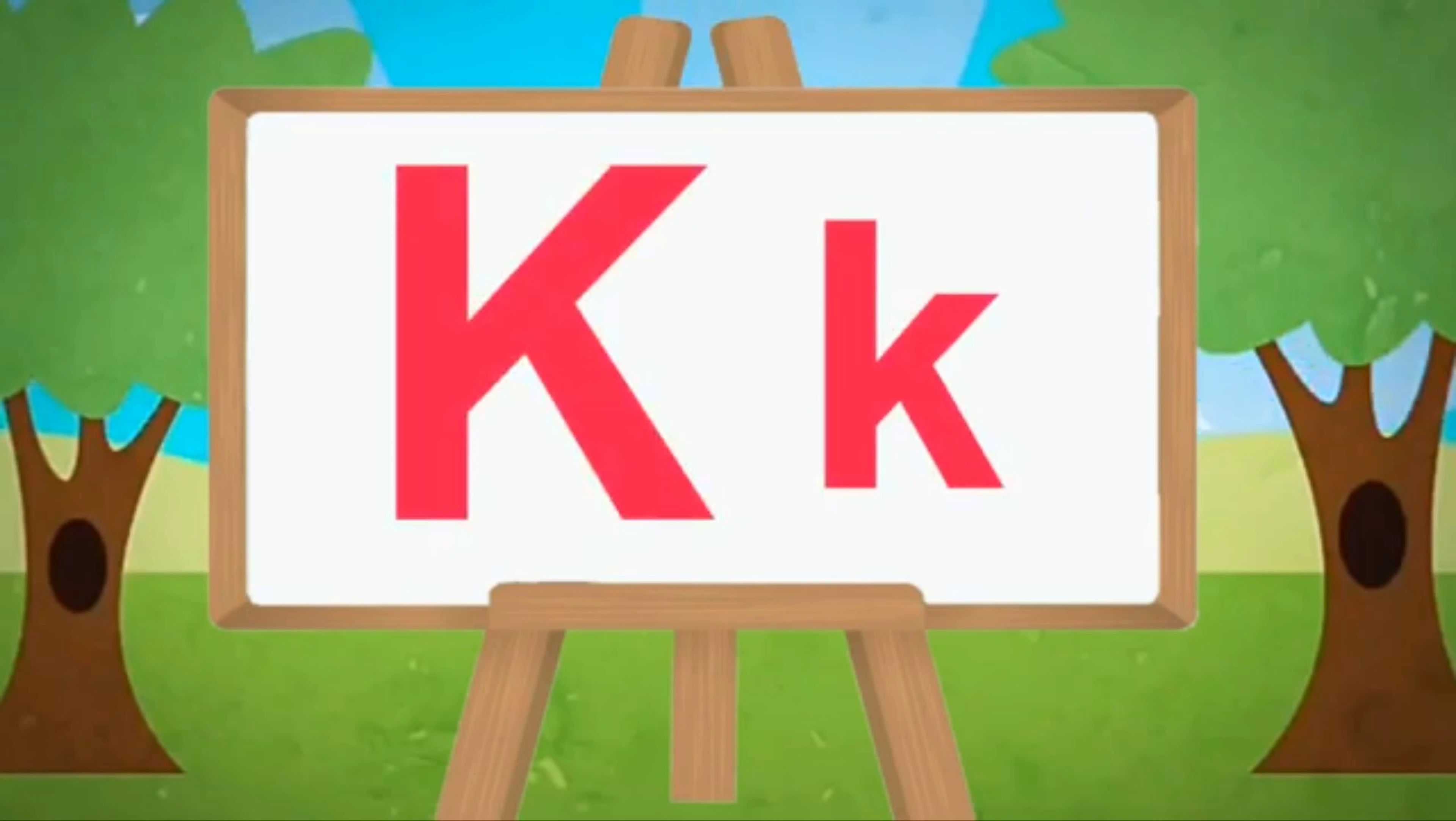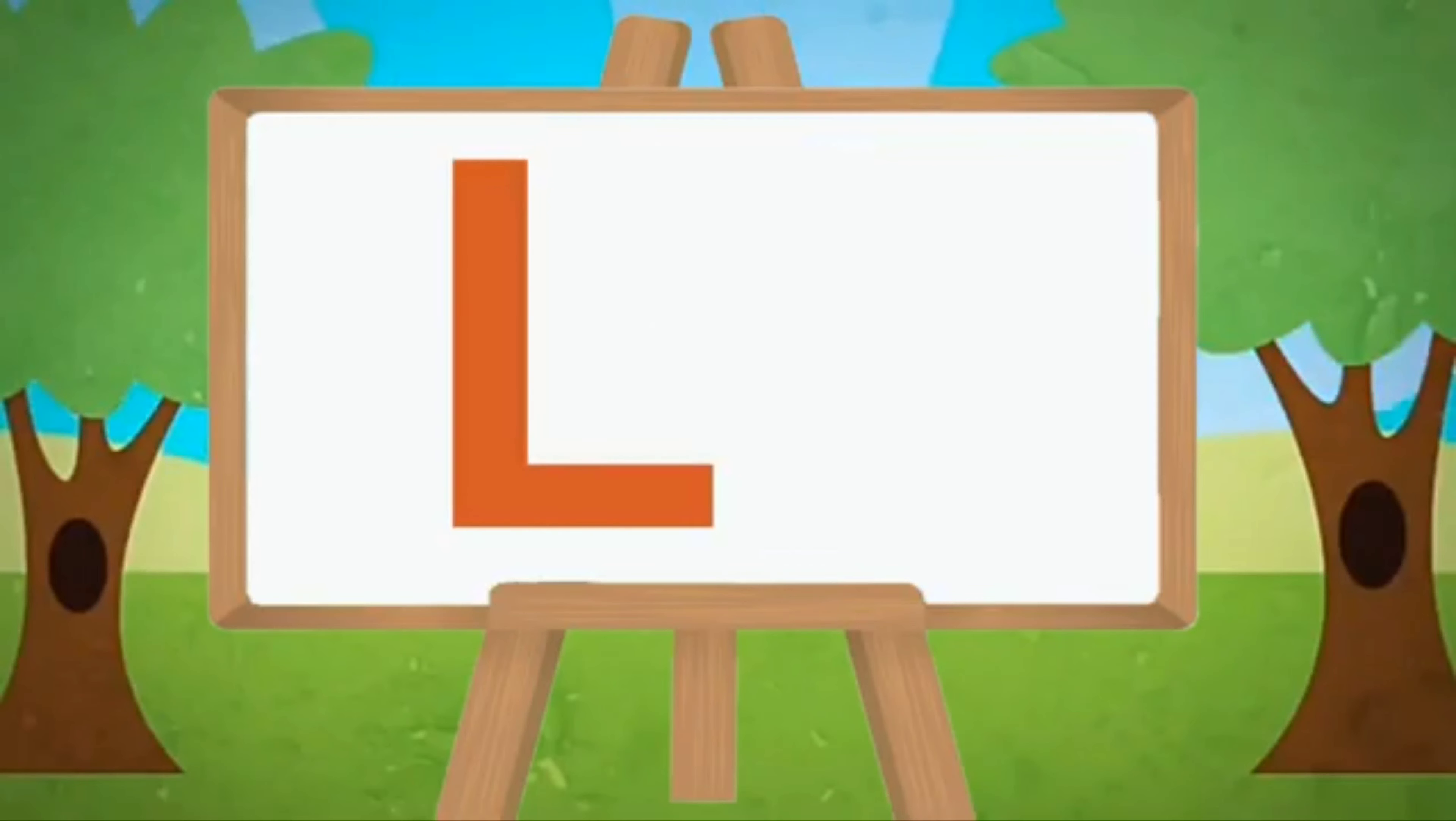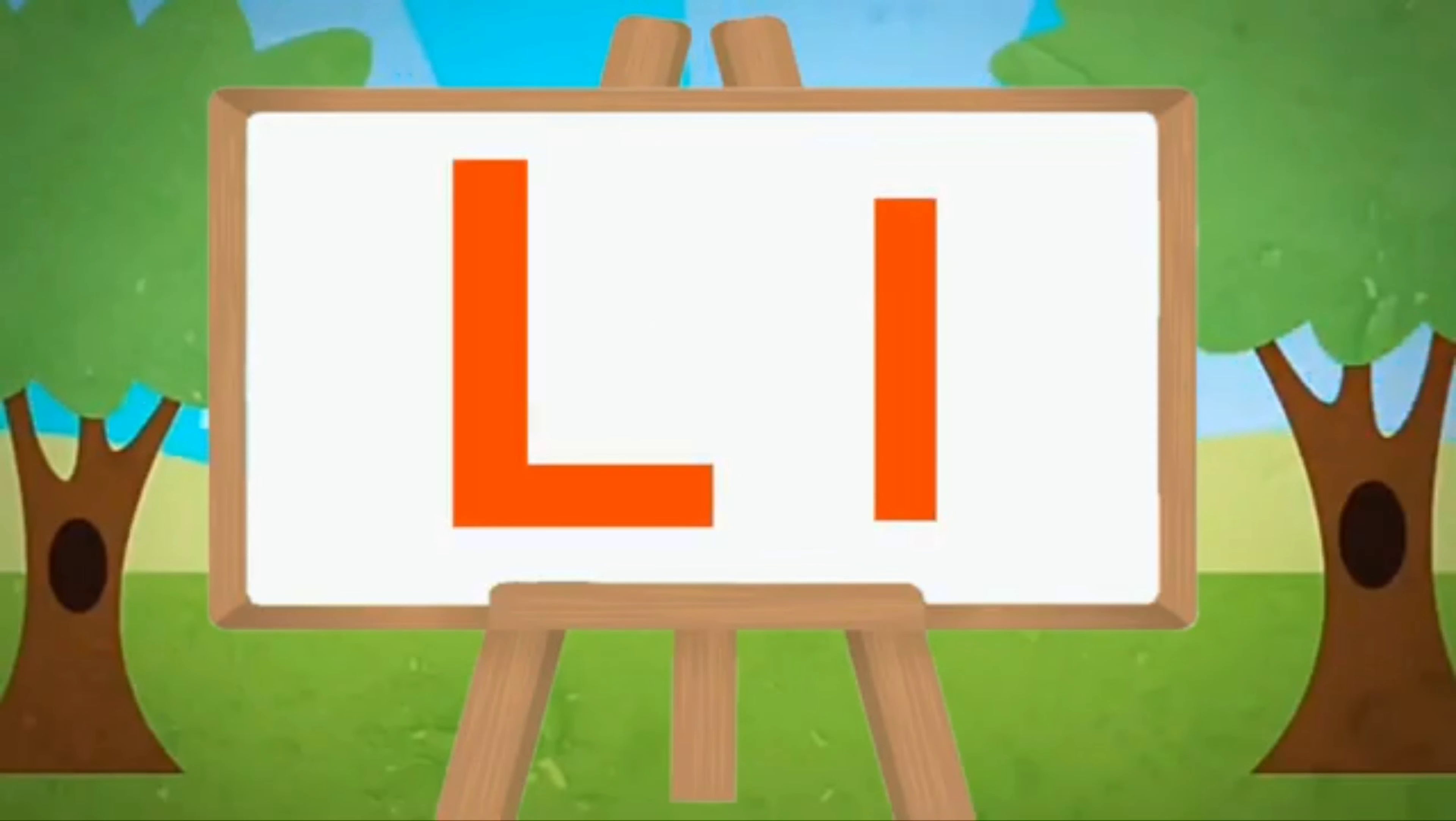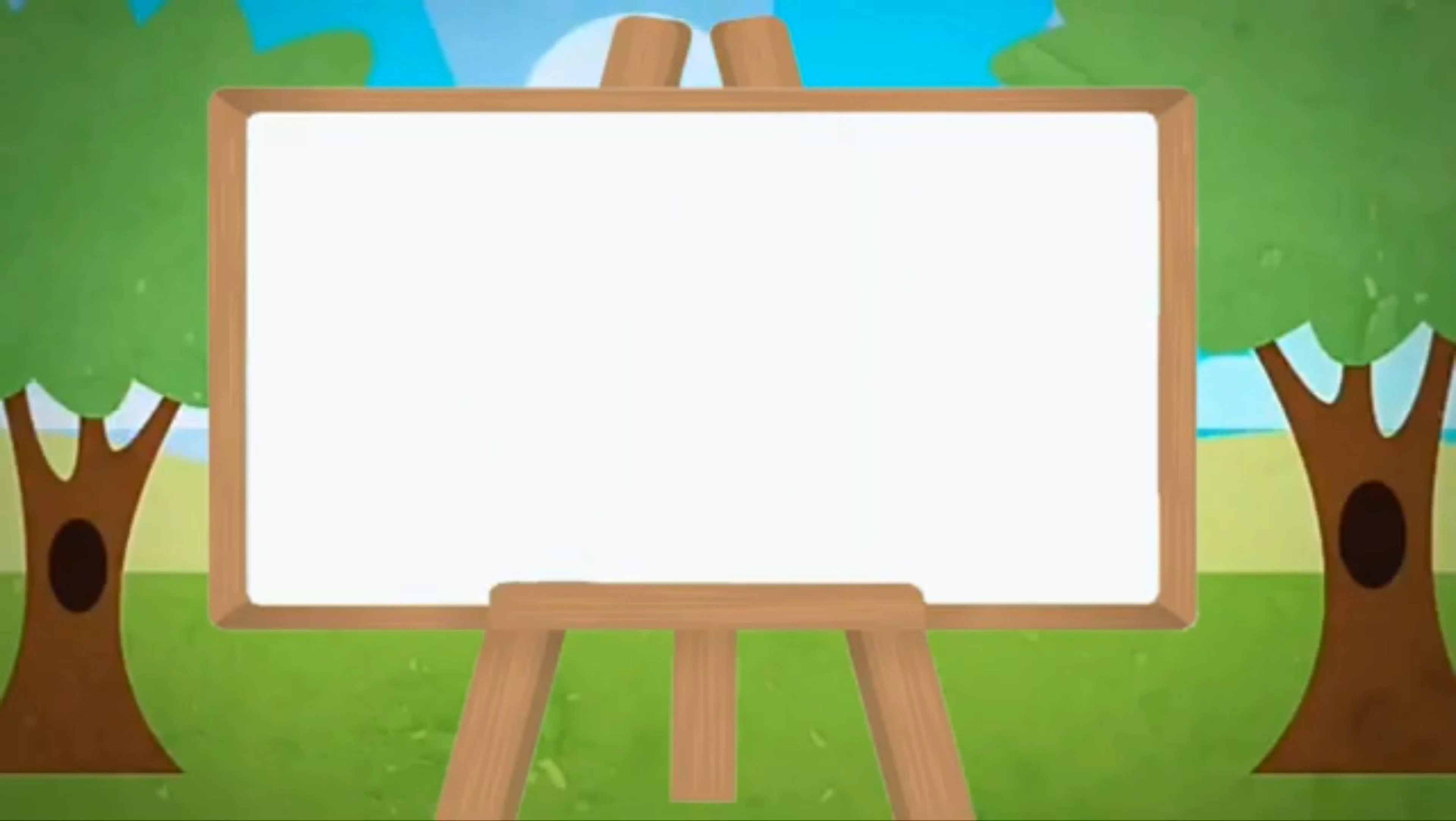Capital K, small k. K for kite, K for king. Capital L, small l. L for leaf, L for lion.